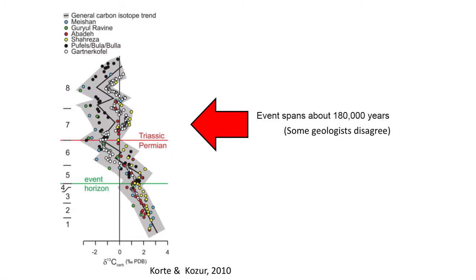There are many theories on what caused the Permian-Triassic extinction, and recent work is highlighting a possible combination of several events stretched out over a hellish period of 180,000 years.